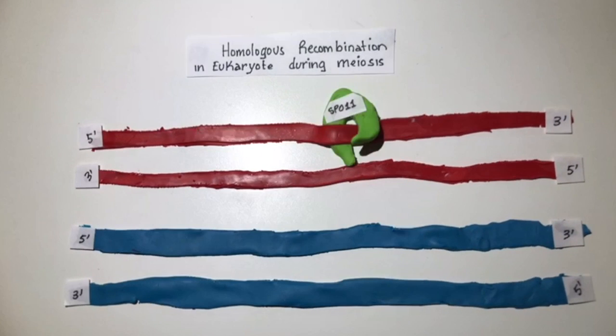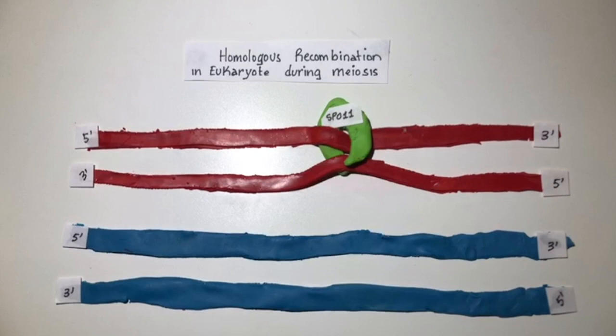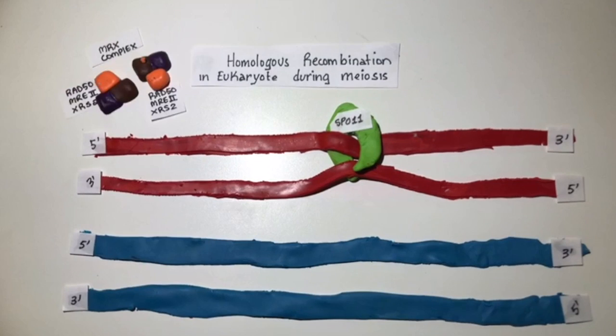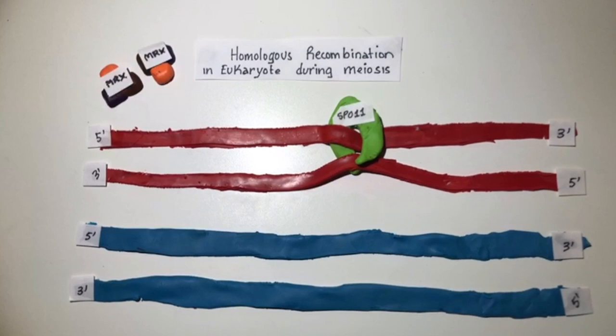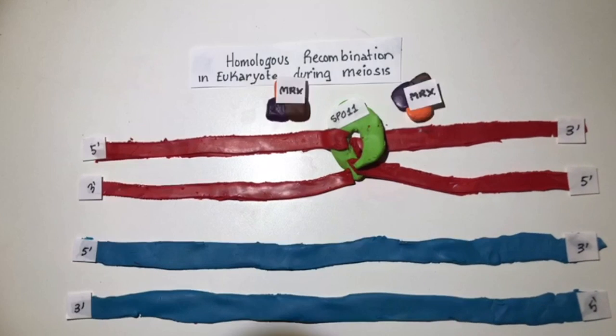The homologous recombination events that occur during meiosis are called meiotic recombination. The process begins when the SPO11 gene encodes a protein that introduces double-stranded breaks in chromosomal DNA. The SPO11 protein cuts the DNA at many chromosomal locations at a very specific time during meiosis but with not much sequence selectivity.